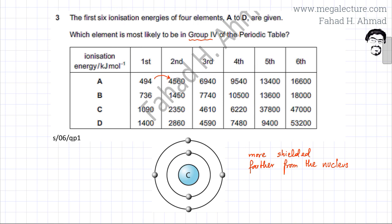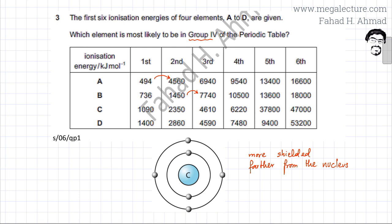Looking at element B: removing the first and second electrons is relatively easy, but as soon as you try to remove the third electron, it becomes very difficult. This means the third electron was probably in an inner shell. So in B, the outermost shell only has two electrons; the rest are from inner shells.